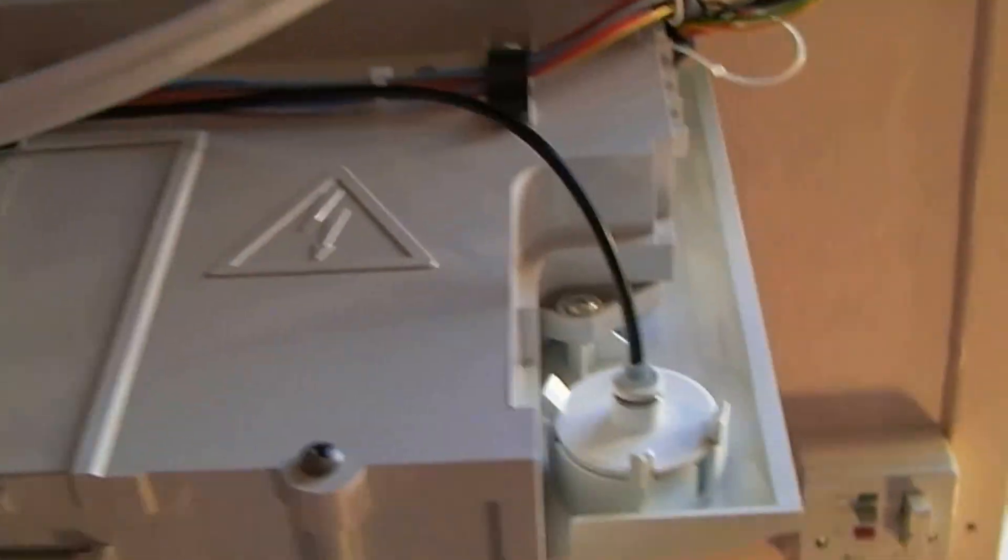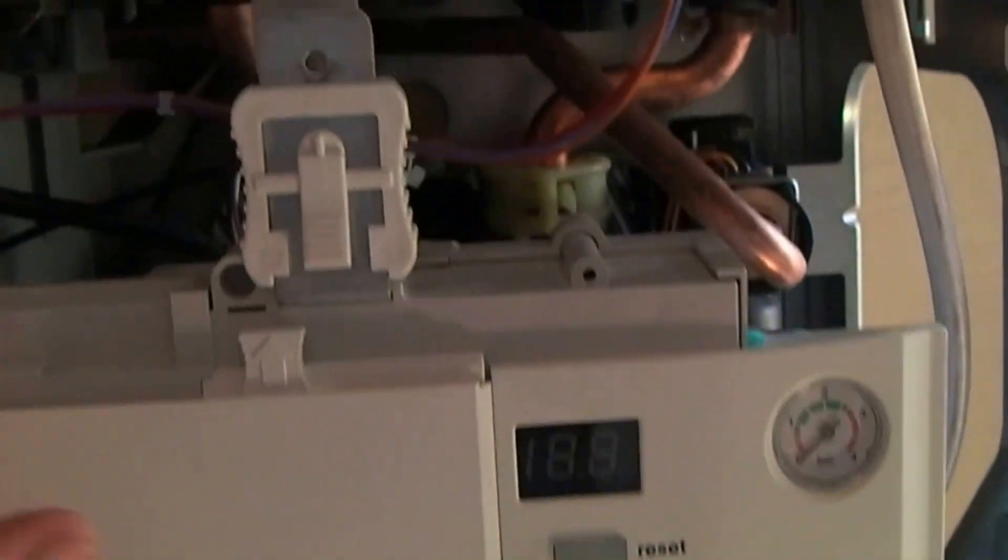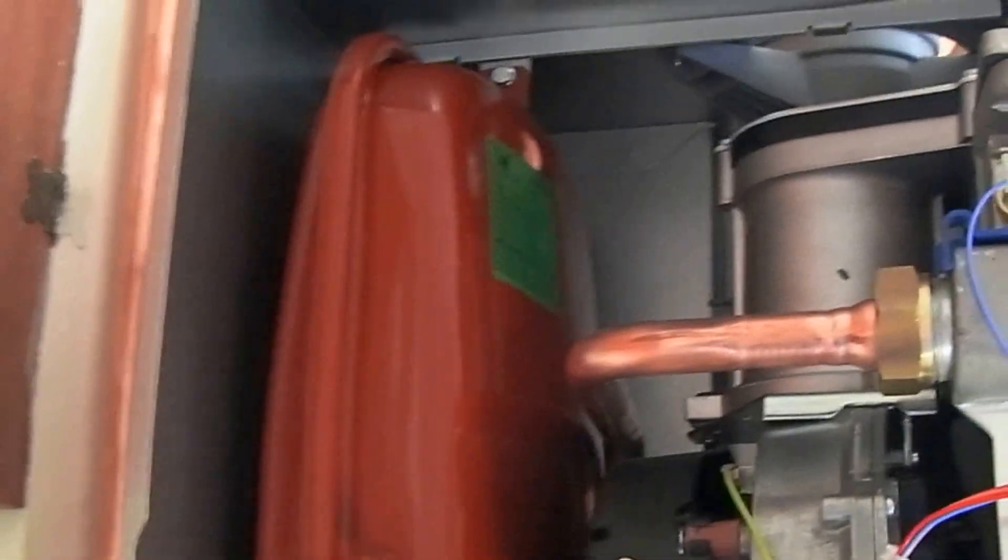The control panel is here, just clicks into place. You've got the main parts of the boiler there—you can see the expansion vessel, the heat exchanger, and there's a little window for viewing the flame.